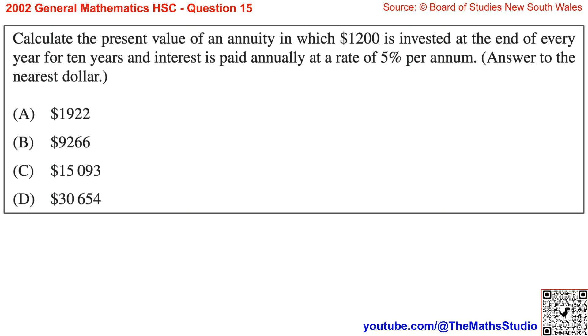Question 15. Calculate the present value of an annuity in which $1,200 is invested at the end of every year for 10 years and interest is paid annually at a rate of 5% per annum. Answer to the nearest dollar.